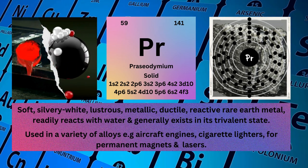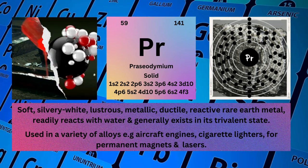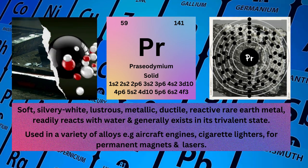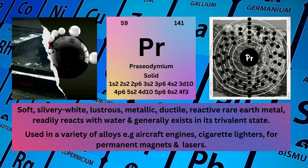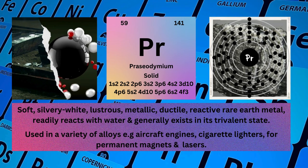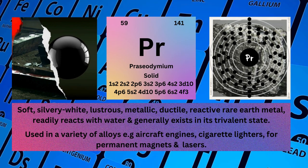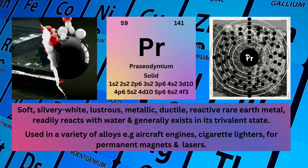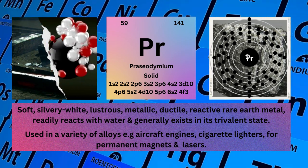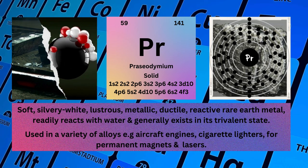Electronic configuration: 1s²2s²2p⁶3s²3p⁶4s²3d¹⁰4p⁶5s²4d¹⁰5p⁶6s²4f³. Physical properties: Soft, silvery-white, lustrous, metallic, ductile, reactive rare earth metal that readily reacts with water and generally exists in its trivalent state.